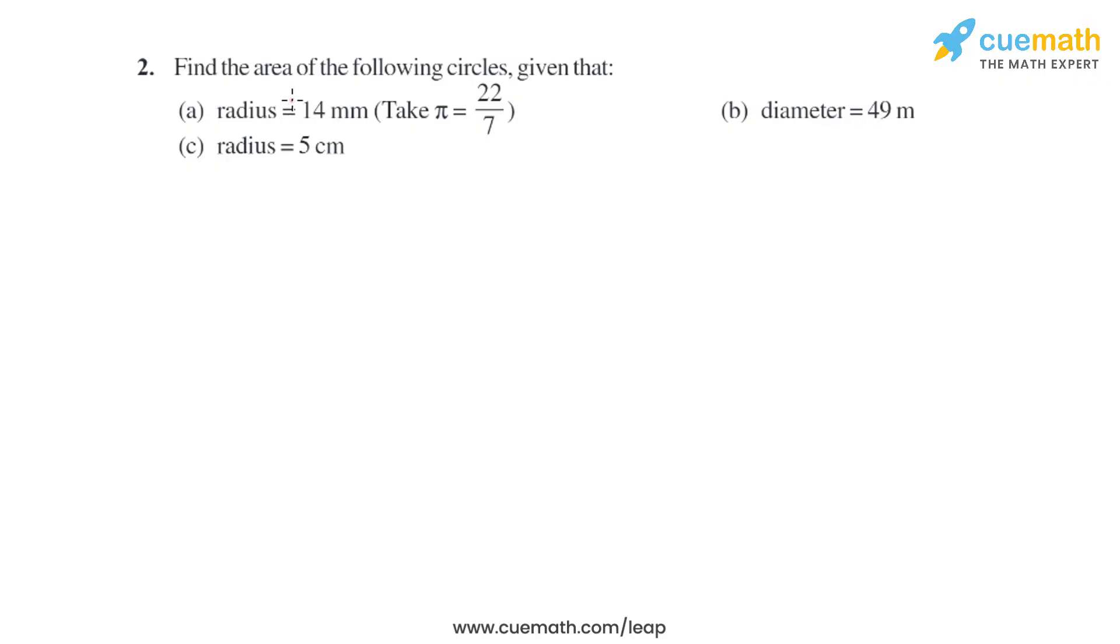Question 2 of this exercise says find the area of the following circles given that: (a) radius = 14 millimeters, (b) diameter = 49 meters, and (c) radius = 5 centimeters. So we have to find the area of the circles when we know the radius and the diameter.